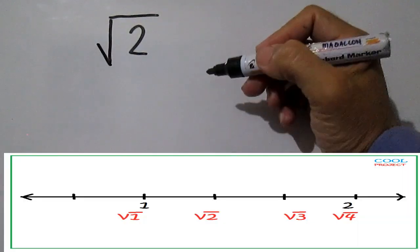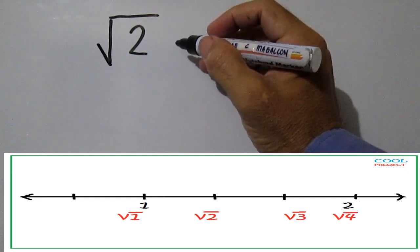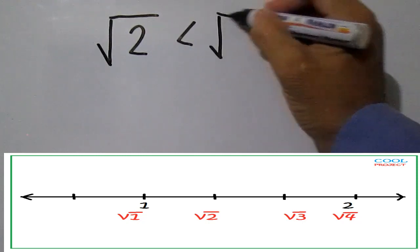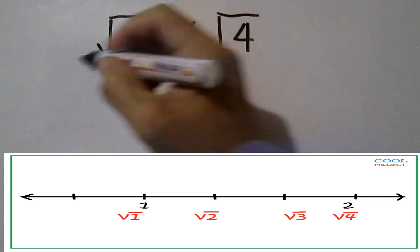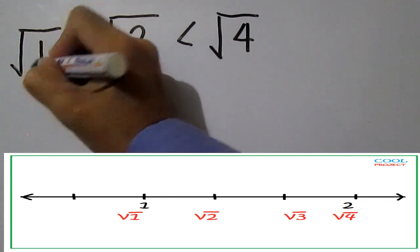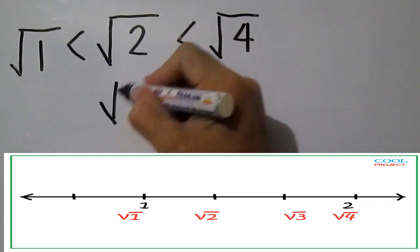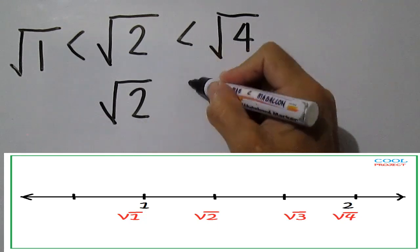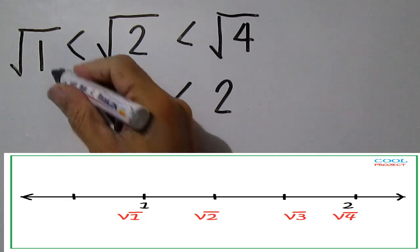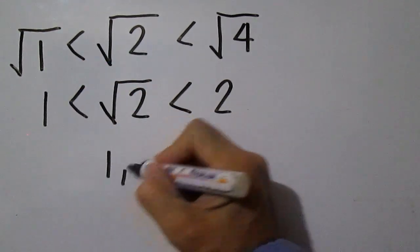Square root of 2 is less than square root of 4 and greater than square root of 1. Square root of 2 is less than 2 and greater than 1. Therefore, square root of 2 is between integers 1 and 2.